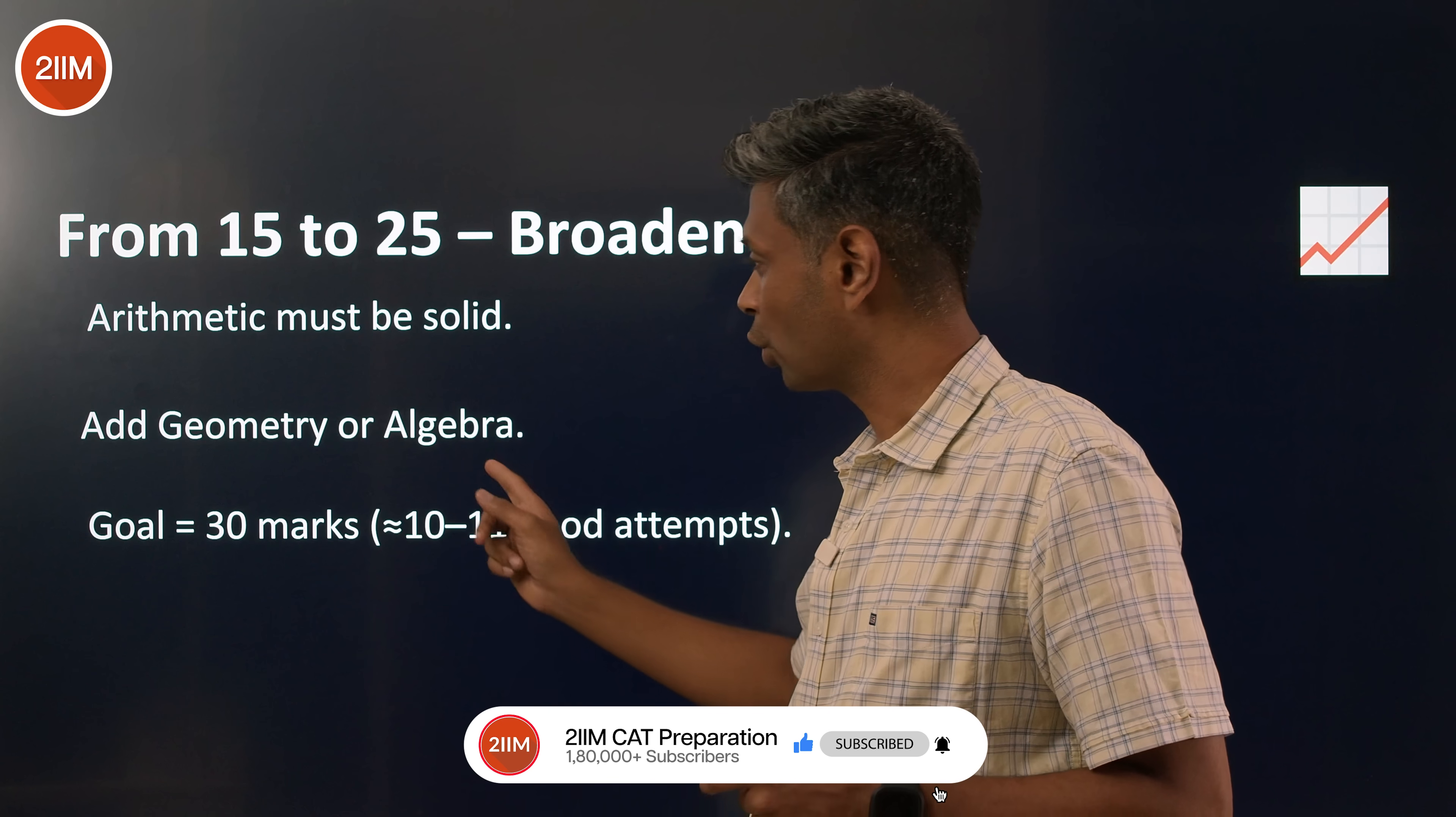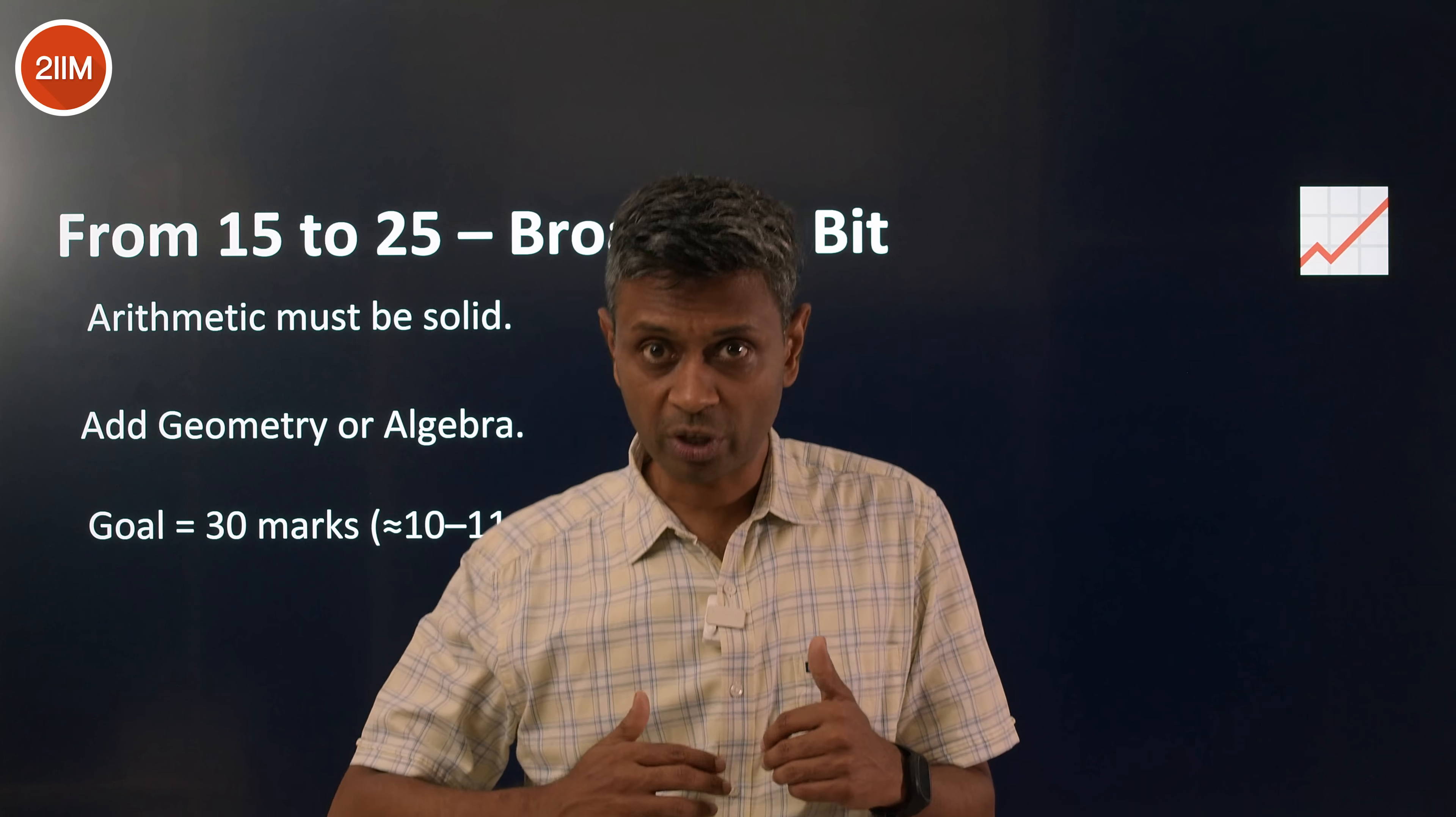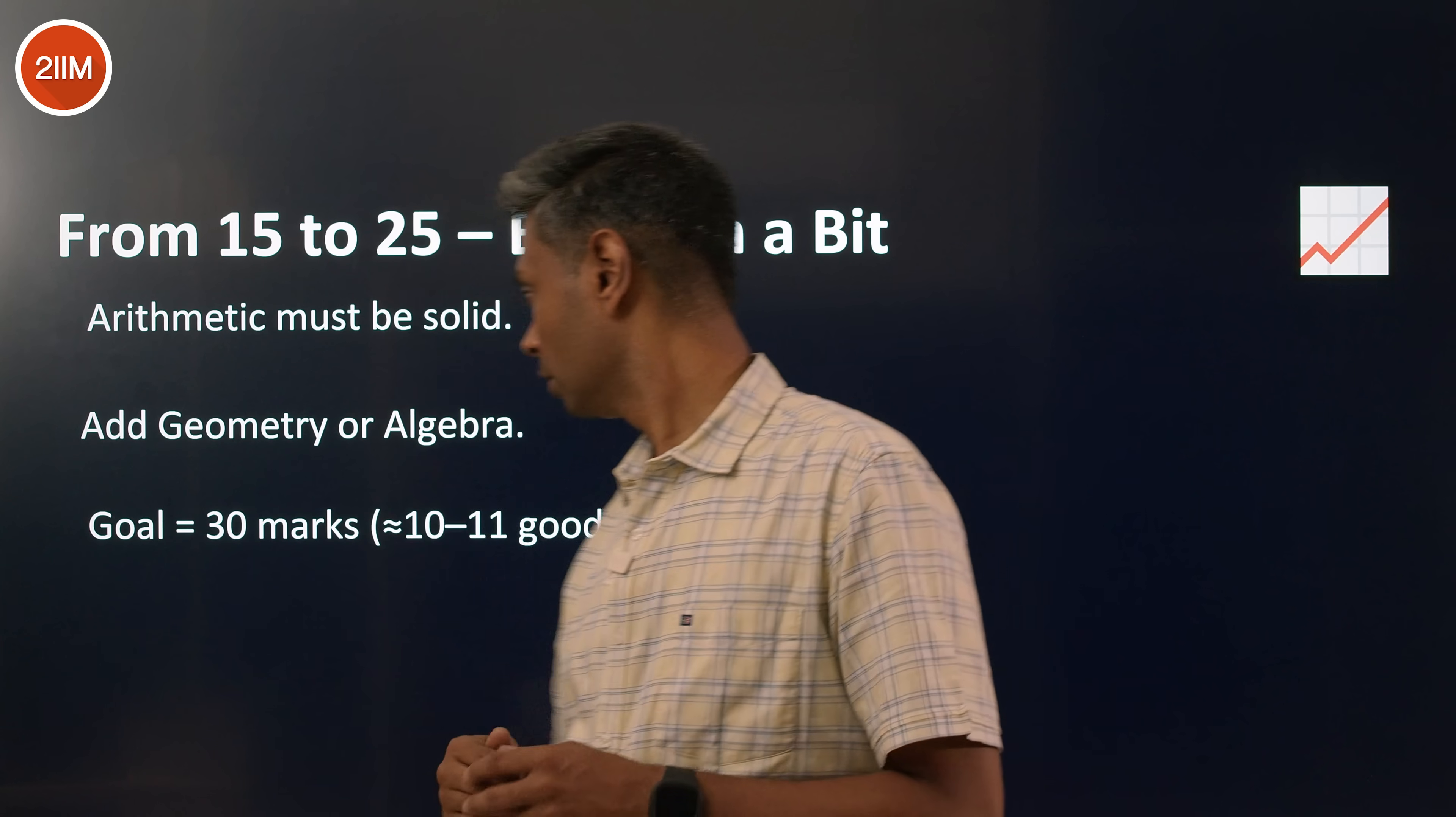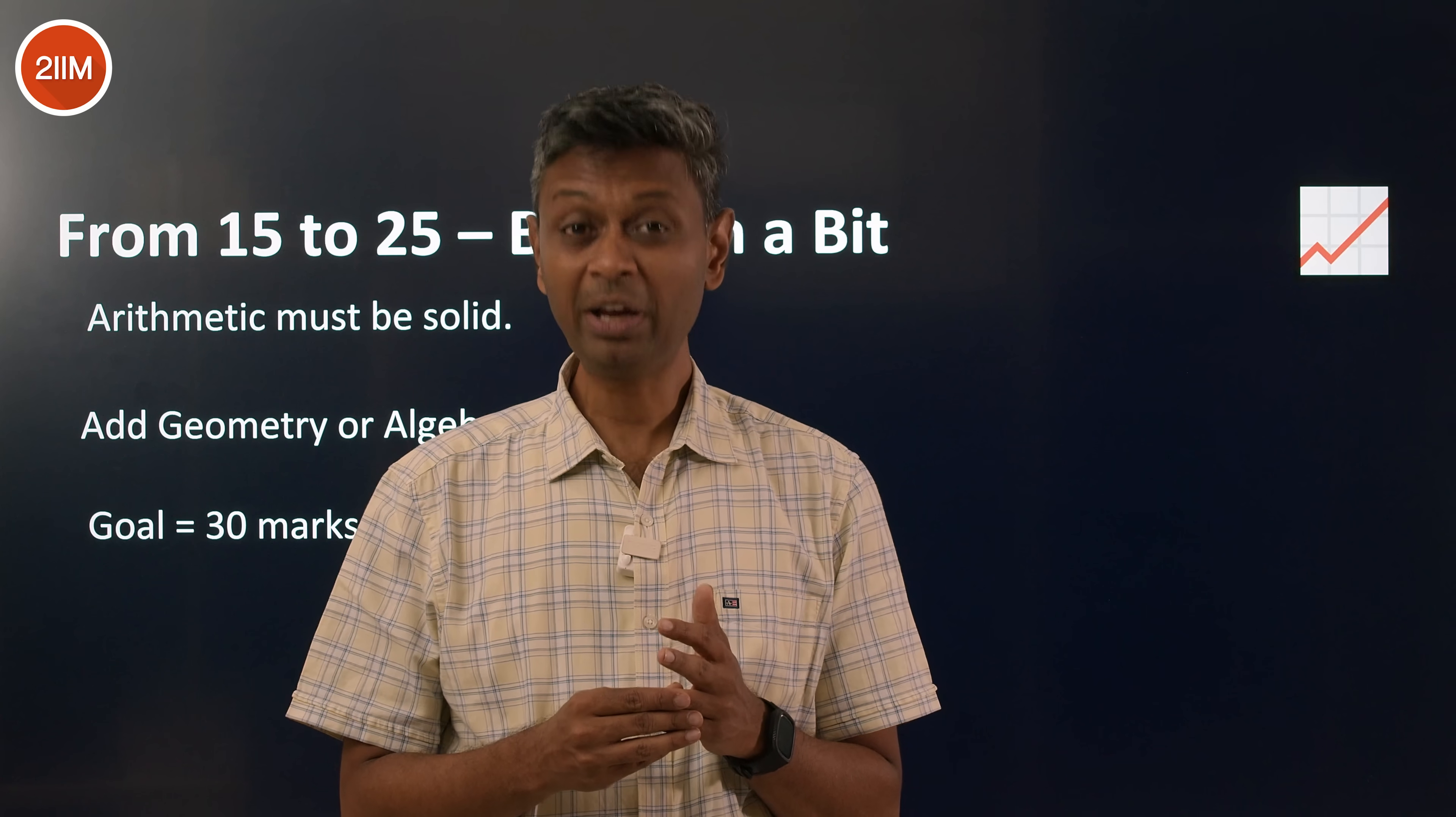After that, from here on in, you have to add either algebra or geometry. Already here you're getting 19, 20 marks consistently. Then you're saying I need to go to 28 marks, 30 marks. 30 marks is 10 questions all correct, or 13 questions one or two wrong. Which means you have to step outside of arithmetic. My preferred next additional thing is algebra. Goal is now 30 marks. From here on in, decision making becomes more important. Slightly broadening the syllabus becomes important. Speed also begins to play a role.